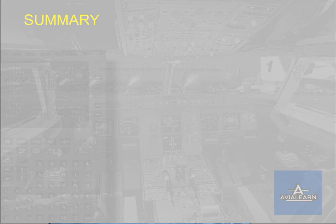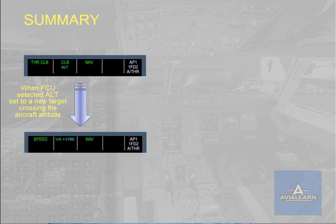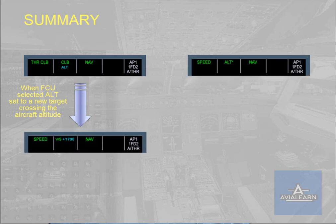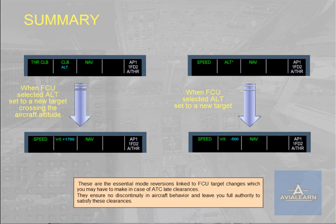These are the essential mode reversions linked to FCU target changes, which you may have to make in case of ATC late clearances. They ensure no discontinuity in aircraft behaviour and leave you full authority to satisfy these clearances.